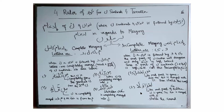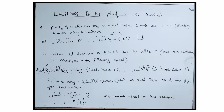We do not recite Lau-wa-wa-la without Gunna. Rather, we give the Gunna, hold it, and recite: Lau-wa-wa-la. In summary, when Noon Sakina or Tanween are followed by Mim, Nun, Lam, or Ra, there is complete merging (Idgham Kamil) — nothing is left of Noon Sakina. But when followed by Waw or Ya, one characteristic — Gunna — remains behind, making it an incomplete merging, Idgham Naqis.